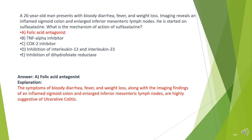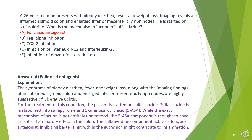The answer is A. Folic acid antagonist. The symptoms of bloody diarrhea, fever, and weight loss, along with an inflamed sigmoid colon and enlarged inferior mesenteric lymph nodes, are highly suggestive of ulcerative colitis. Sulfasalazine is metabolized into sulfapyridine and 5-aminosalicylic acid (5-ASA). The 5-ASA component has an anti-inflammatory effect in the colon, while the sulfapyridine component acts as a folic acid antagonist, inhibiting bacterial growth in the gut.